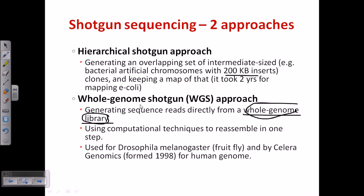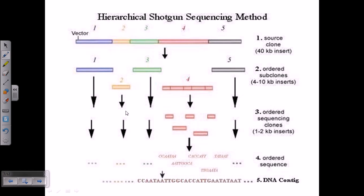We take the genes from the whole genome library and cleave them using restriction enzymes into smaller fragments, then use them. This approach was used for Drosophila melanogaster and by Celera Genomics in 1998 for human genome sequencing.